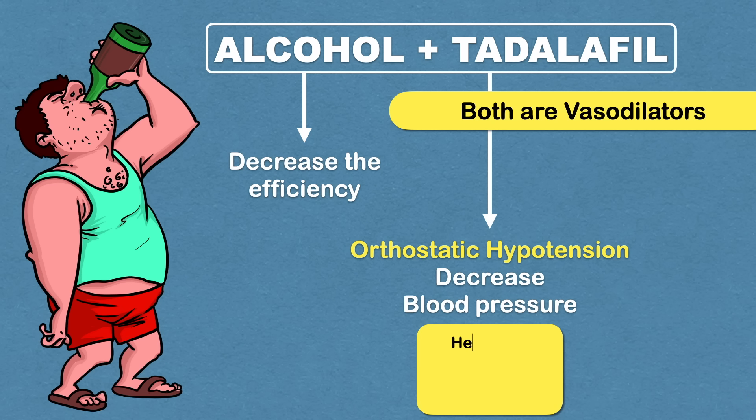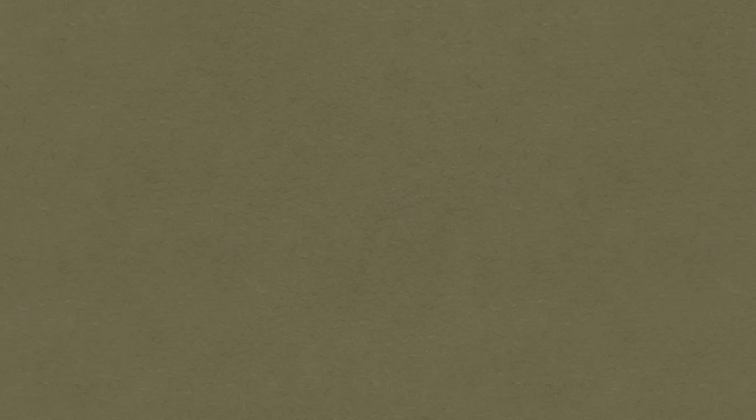Drinking too much alcohol while taking Cialis can lead to orthostatic hypotension. This can cause headache, dizziness and fainting which can cause fractures or other injuries.